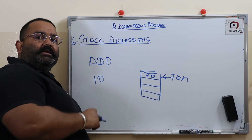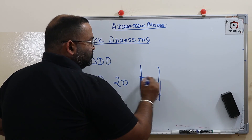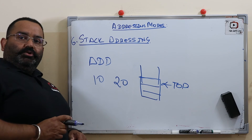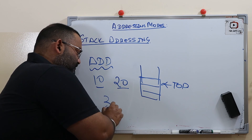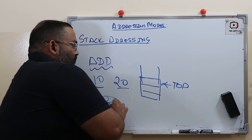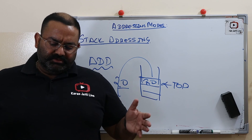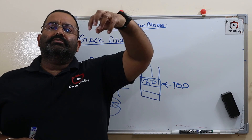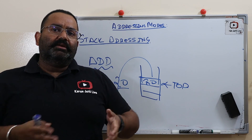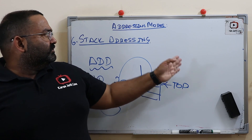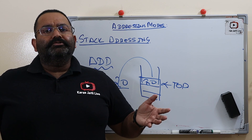Then you pop the second element (20) from the top of the stack. You perform the operation on these two operands: 10 + 20 = 30, then push the result 30 back onto the stack. Reverse Polish Notation uses stack addressing. You always pop the top two elements, perform the operation, and push the result back.